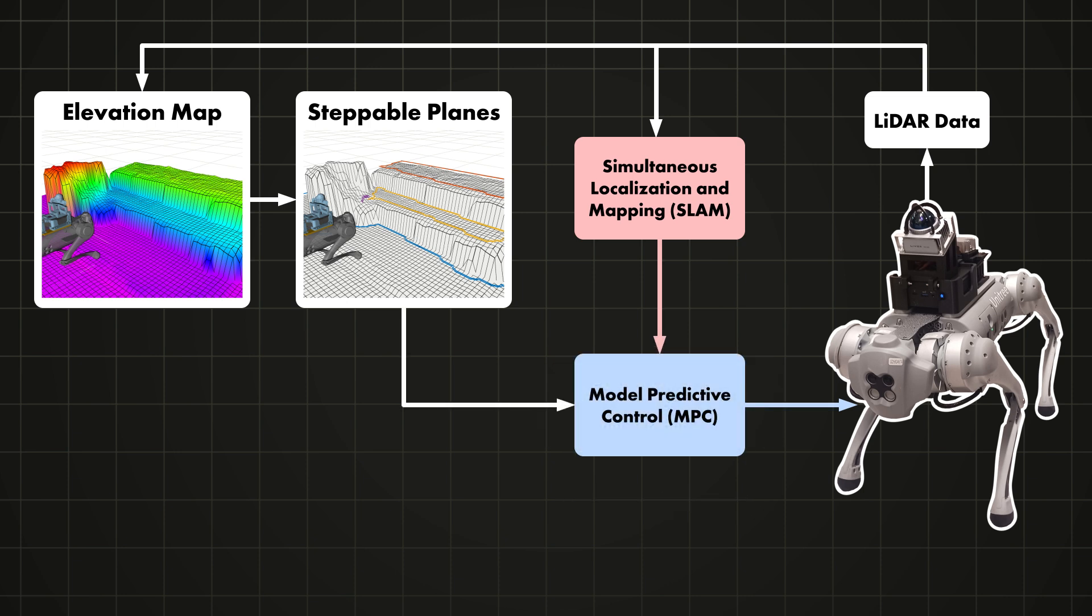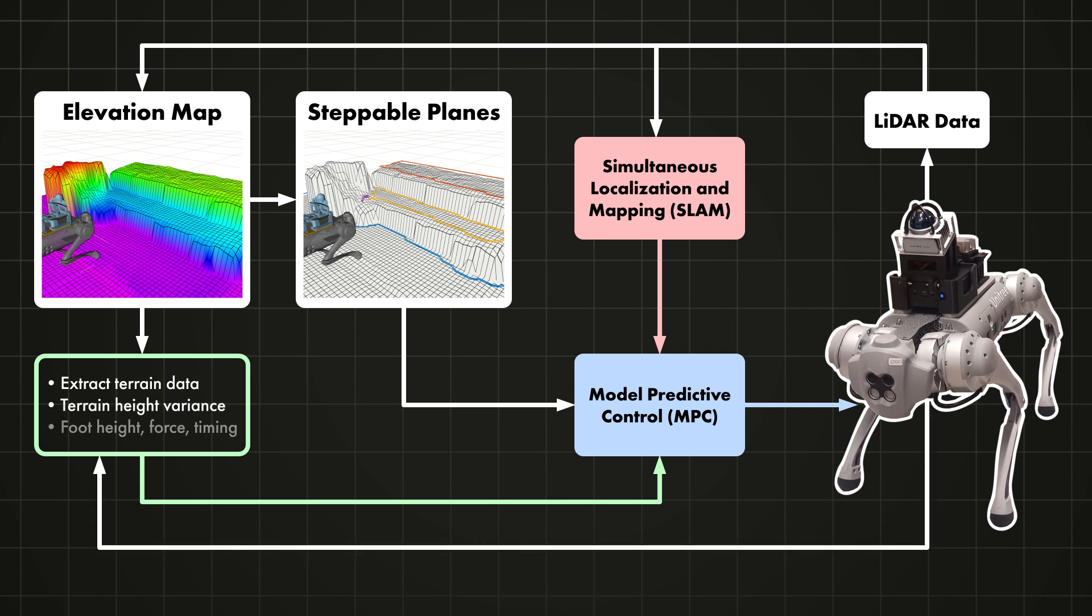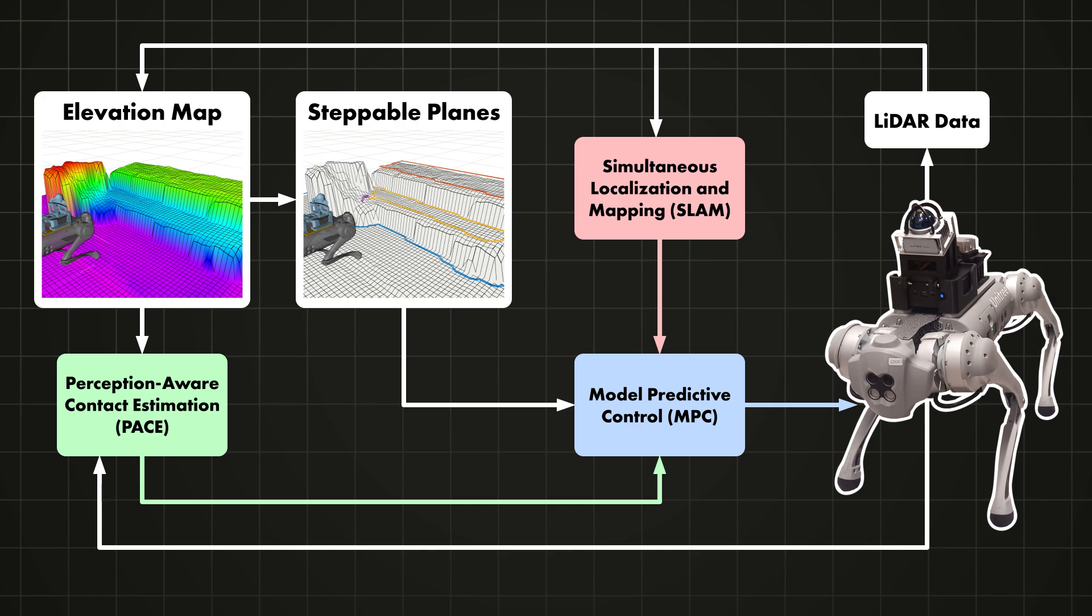One unique advancement from our team is the use of terrain data into model predictive control. Specifically, we calculate the variances of the terrain height where the robot's about to step. These variances are combined with other data including foot height, force, and timing in a common filter. This enables what we call perception-aware contact estimation, or PACE for short.